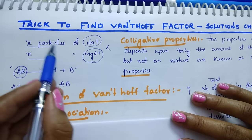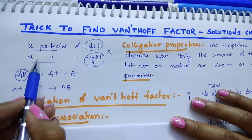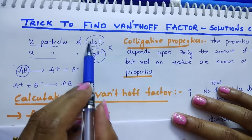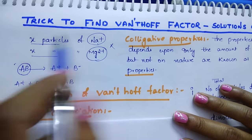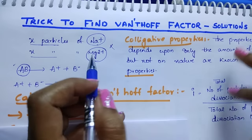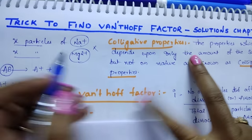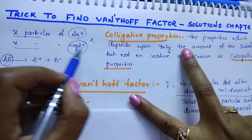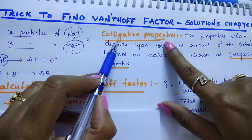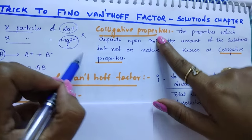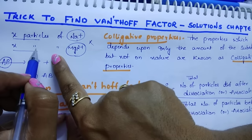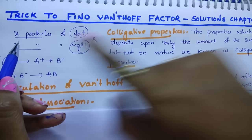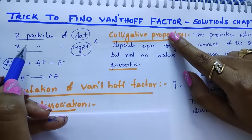Suppose x particles of Na⁺ and x particles of Mg²⁺ are present and both have the same properties. The properties which depend only upon the amount of the substance but not on their nature — these kinds of properties we call colligative properties. If the number of particles changes, colligative properties also change. If the number of particles is the same, colligative properties are the same.